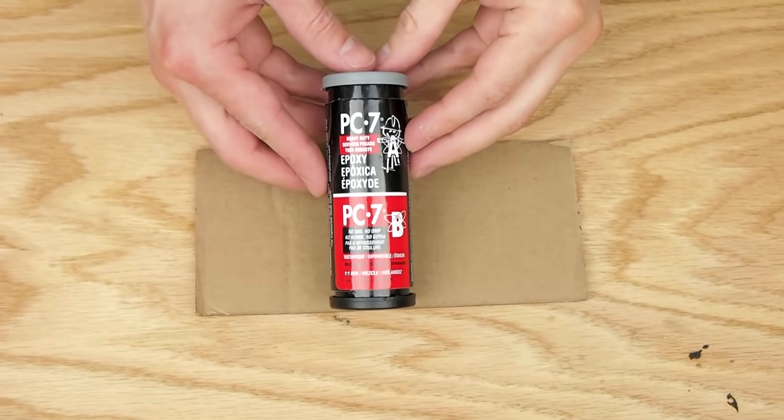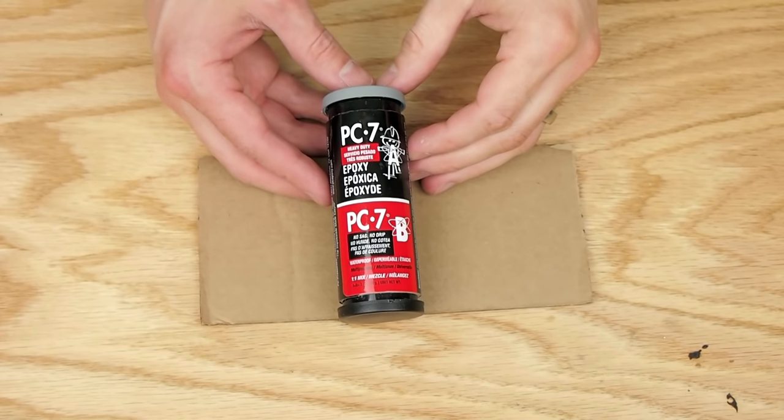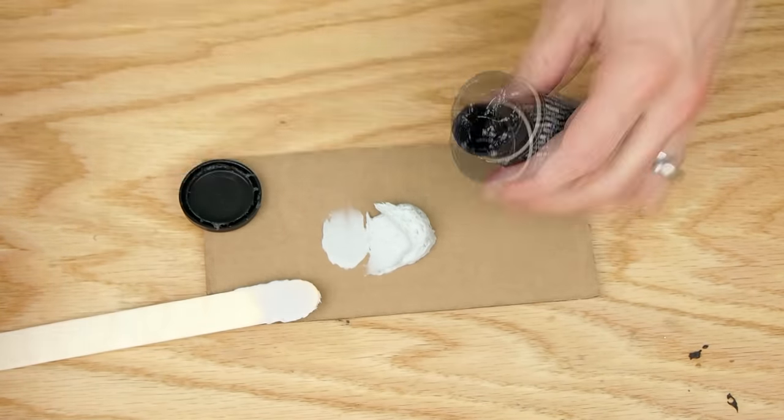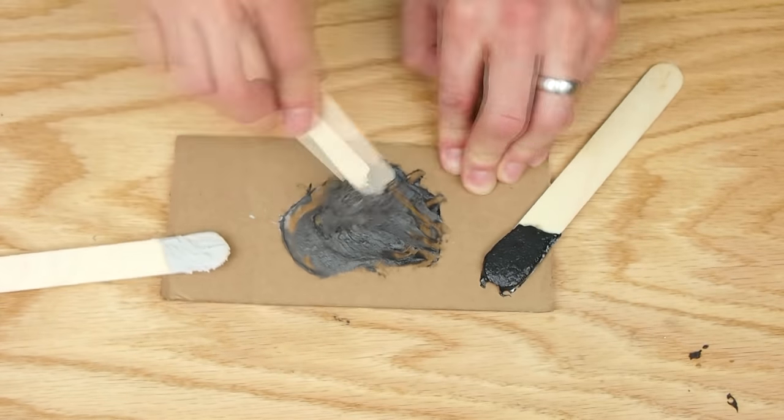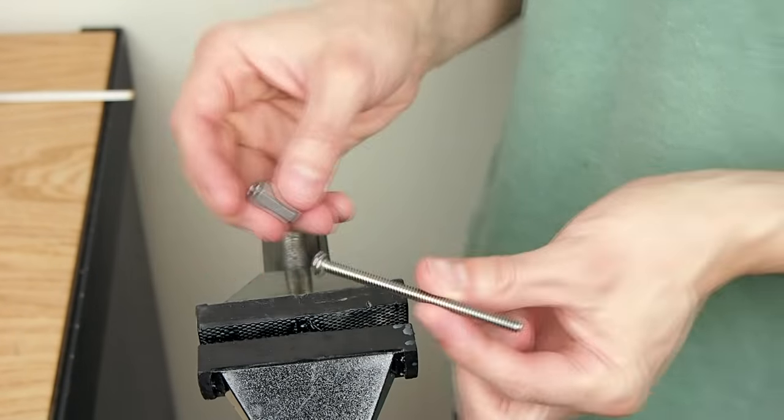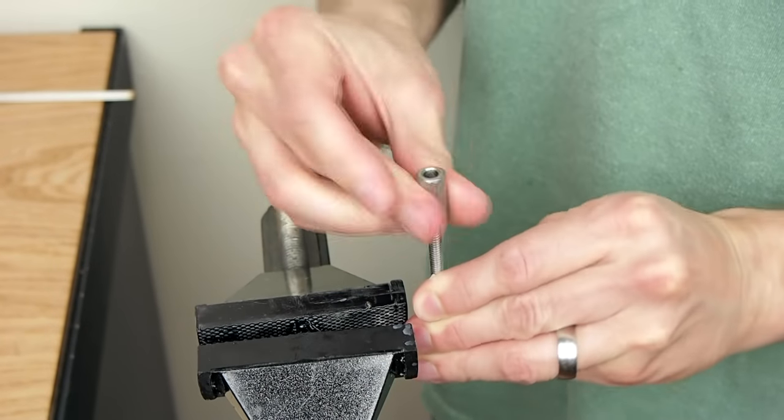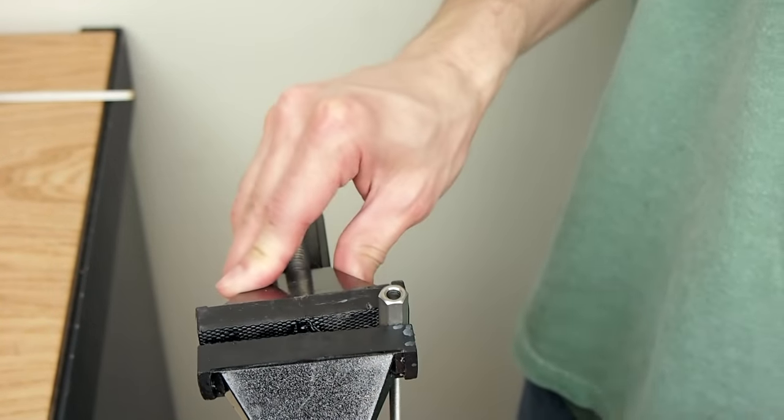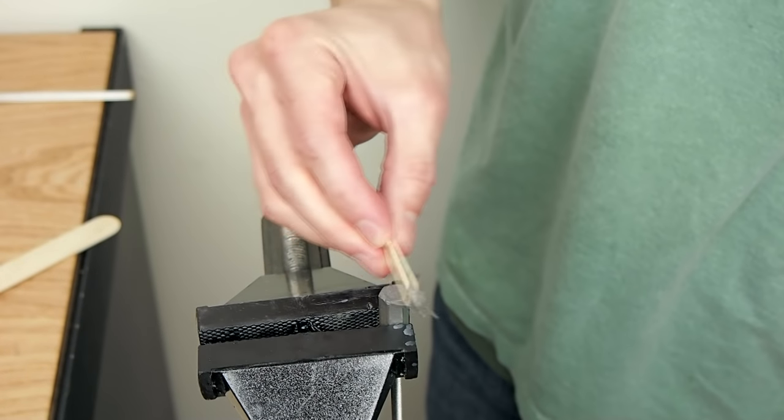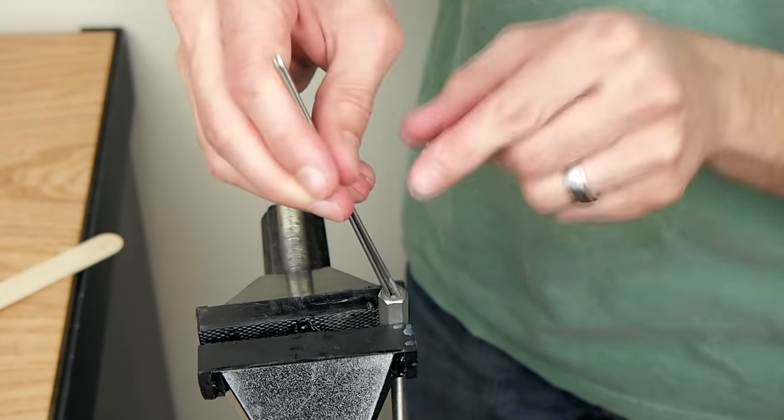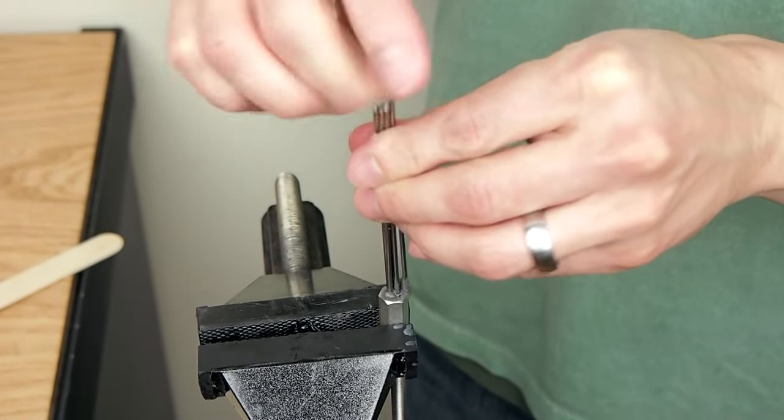I used PC7 to attach the spikes to the nut in the hole I just drilled. PC7 is a two-part metal reinforced waterproof paste epoxy. Link in the description. I threaded a bolt into one side of the coupling nut up to the bottom of the hole I just drilled so that the epoxy wouldn't get on the threads of the nut. Then I filled the hole with PC7 and pushed the spikes into the epoxy filled hole.